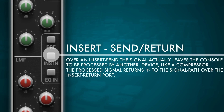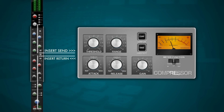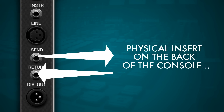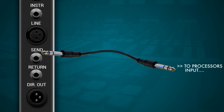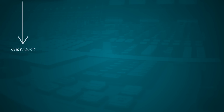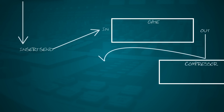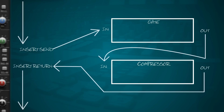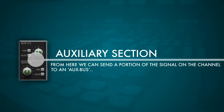In the small section in the center of our EQ, we find our insert point. At an insert point the signal actually leaves the console to be processed, and via the insert return slot we receive that signal back — allowing us to insert any type of processor, such as a compressor, onto a single channel. The physical ins and outs for the insert point are normally on the back of the console. On this model there's a separate insert send and insert return port; on some other models you'll find one port requiring a Y-cable. We're not limited to one processor — we can chain multiple processors from the insert send back to the insert return.